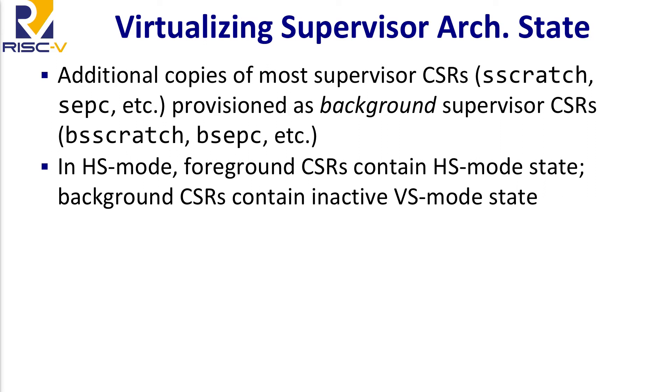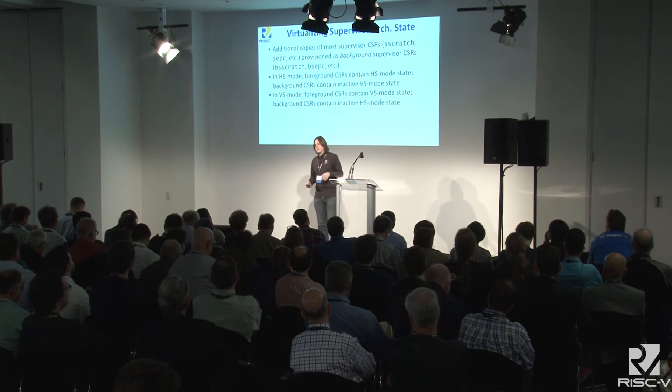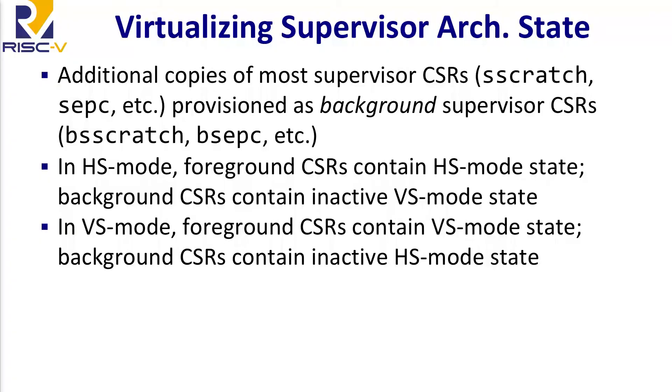A hypervisor interacts with the machine in the same way a normal OS does in that respect. While executing in the hypervisor, the background supervisor CSRs contain the corresponding state for the guest operating system, if one is currently loaded in. So when you're in the hypervisor, the foreground registers contain the hypervisor state and the background registers contain the guest state. When you are running virtualized — in VS mode or VU mode — the foreground CSRs contain the guest OS's state and the background CSRs contain the hypervisor's state.